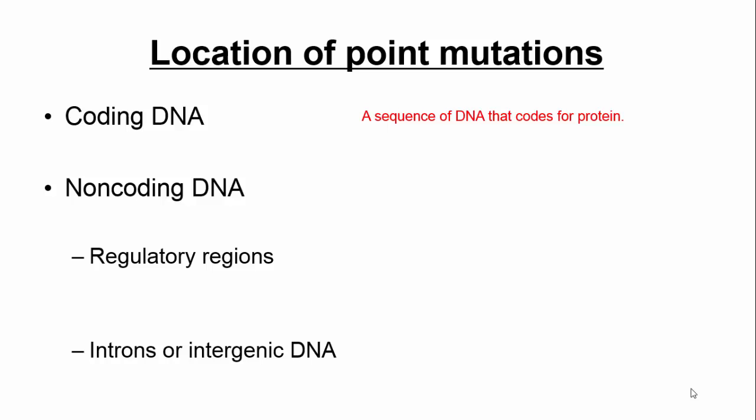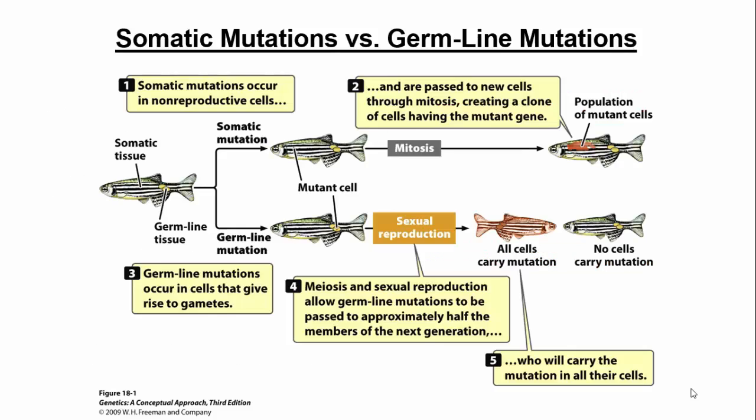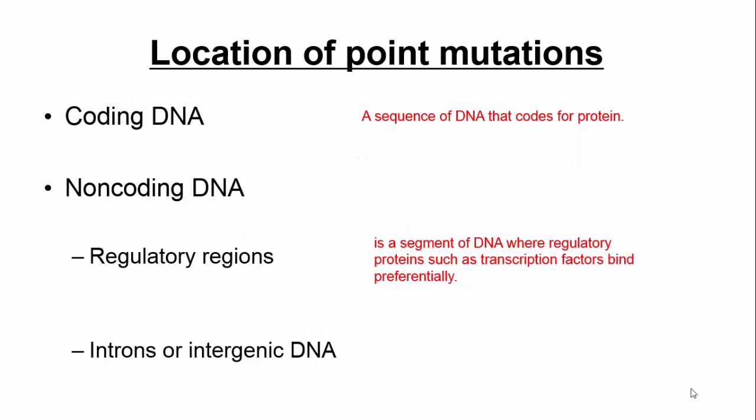The coding region means that sequence of DNA would encode for a protein. Or you could have them in non-coding regions — those are sequences of DNA that do not encode for proteins. Regulatory regions are non-coding regions that are things like promoters. Or you could have introns or intergenic DNA.